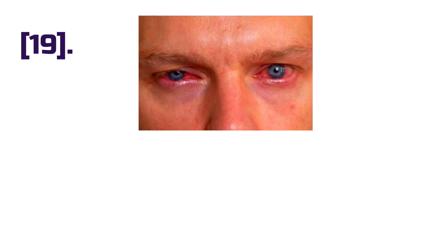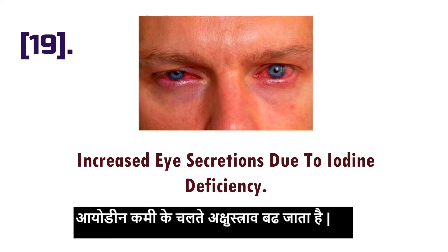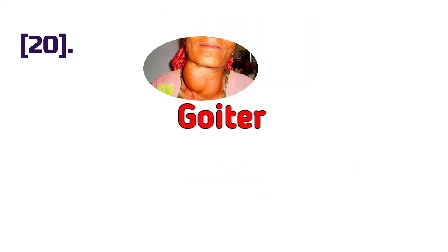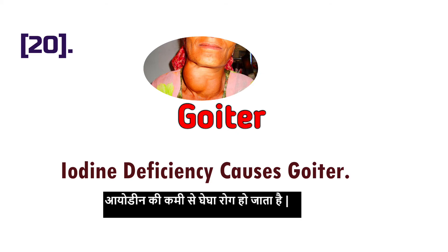Point number nineteen: increased eye secretion occurs due to iodine deficiency. Point number twenty: iodine deficiency causes goiter. So this was the last class in which you have studied these important points.